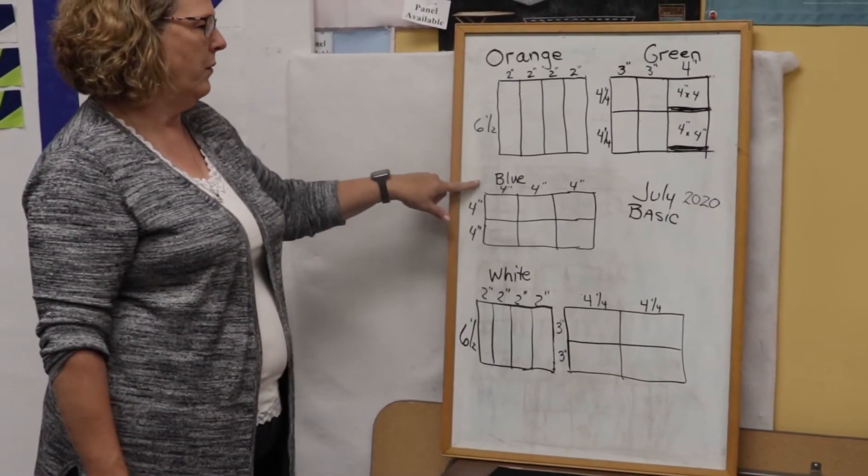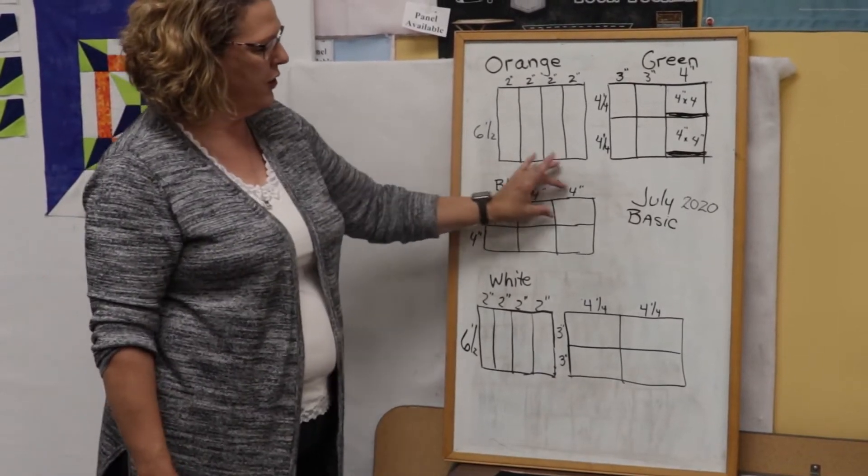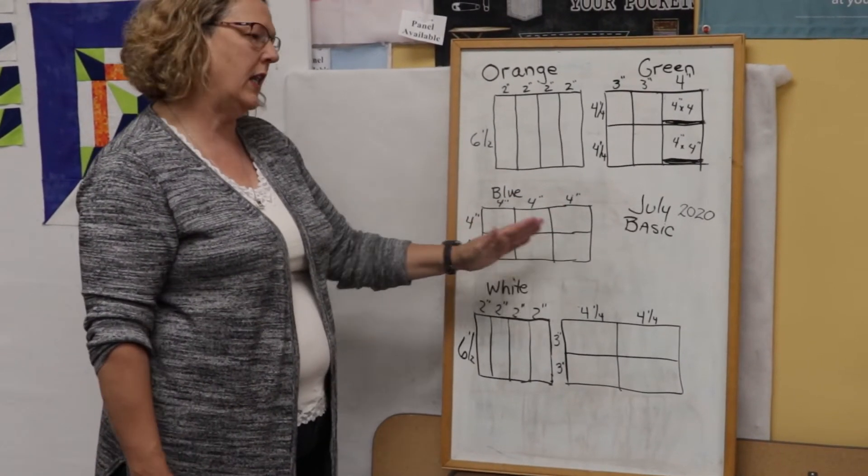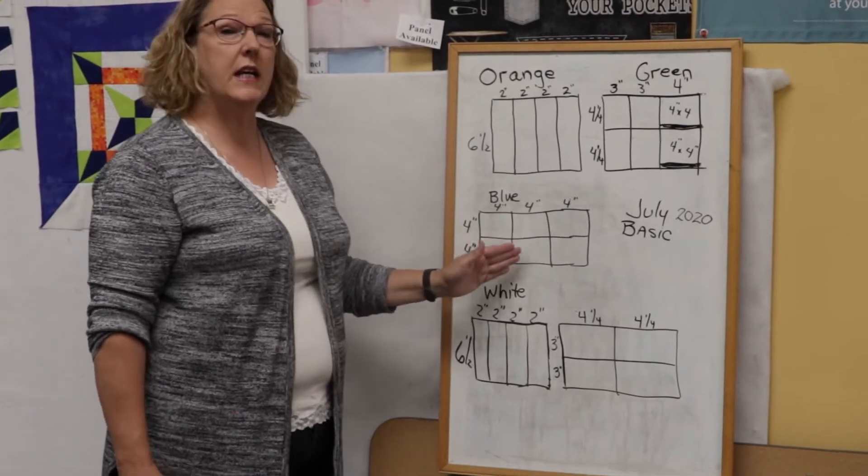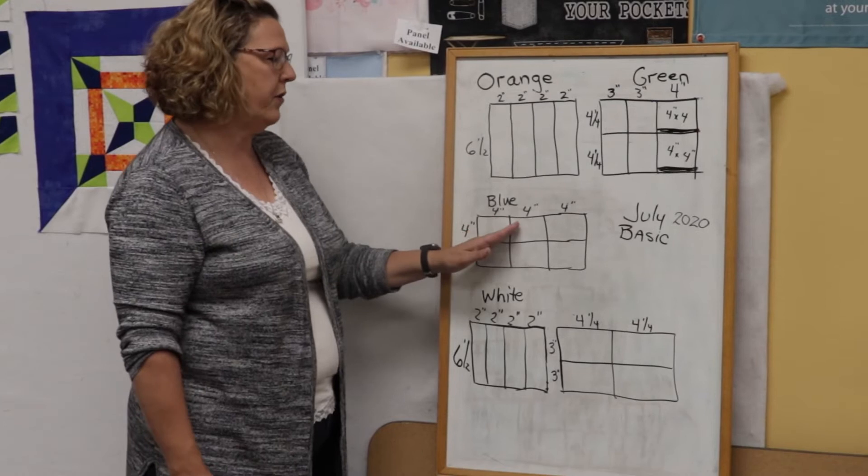The blue, again, a 4-inch, so you can cut a 4-inch strip. And basically all you're trying to get are six 4-inch squares out of the blue. Make sure they're nice and square.